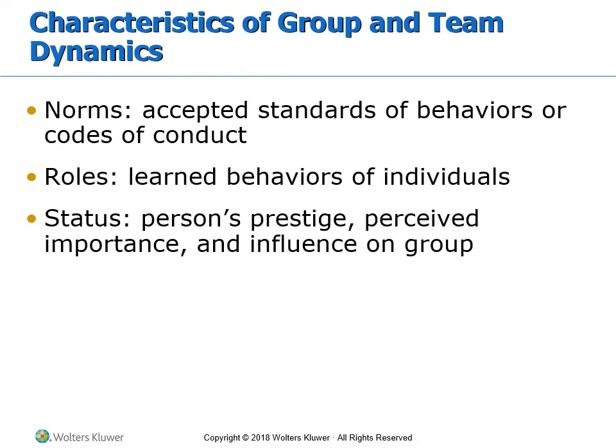Next are vocabulary terms for the characteristics of group and team dynamics — make flashcards. Norms are the accepted standards of behavior or codes of conduct: will someone arrive late, dominate the group, or act as the class clown? Based on norms, people take on roles — their learned behaviors. These can be formal roles like treasurer, historian, or secretary, or informal roles like the social linchpin who connects the group.